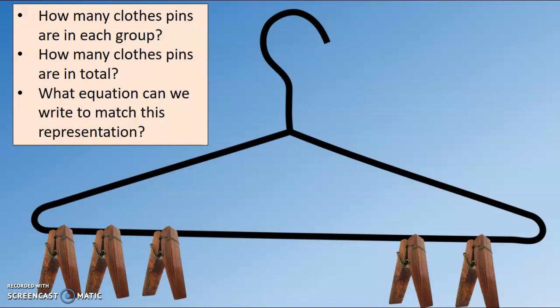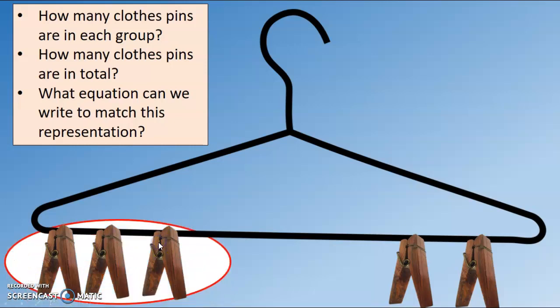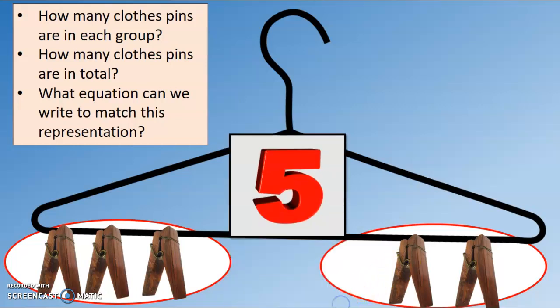Take a look at this clothes hanger here. How many clothespins are in each group at the bottom? How many are in this group? Three. Good. How about over here? Two. Three in one group and two in the other group. How many clothespins are in total? Did you say five? Good job.